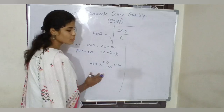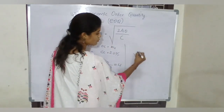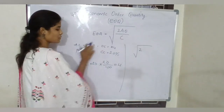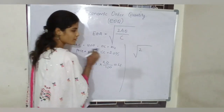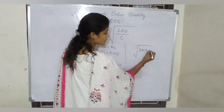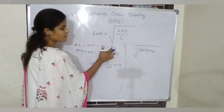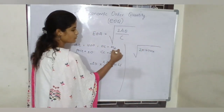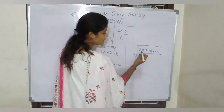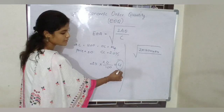Now just substitute into the formula. Under root: 2 into A, which is annual consumption of 1200 units, into O, which is ordering cost of 24. So we have 2 into 1200 into 24, divided by carrying cost, which we have calculated as 4.